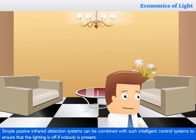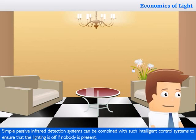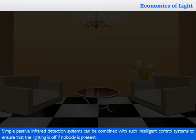Simple, passive infrared detection systems can be combined with such intelligent control systems to ensure that lighting is off if nobody is present.